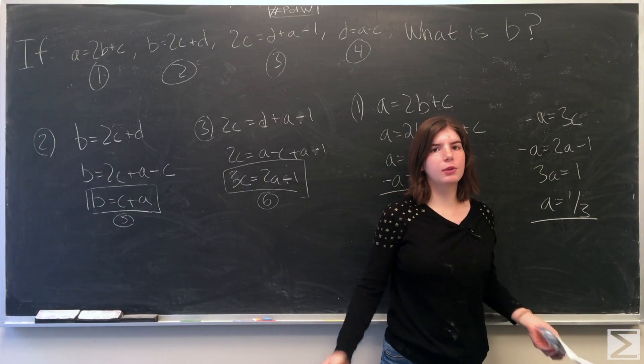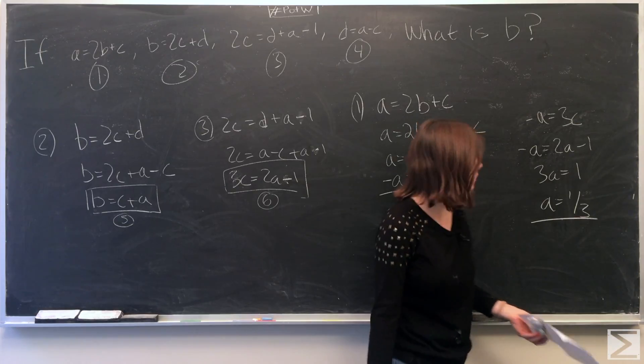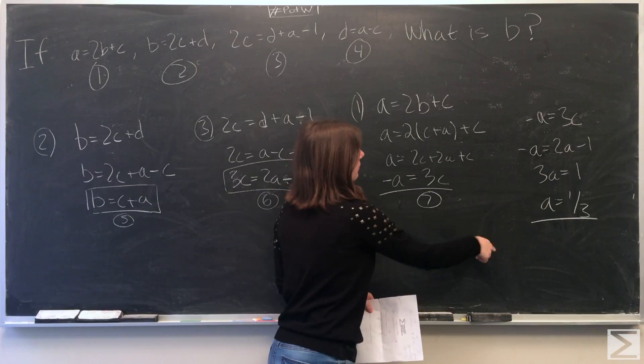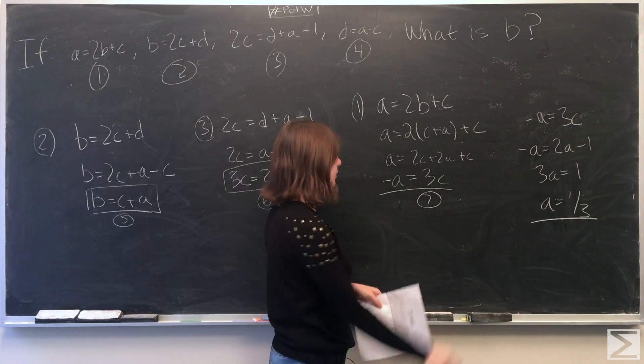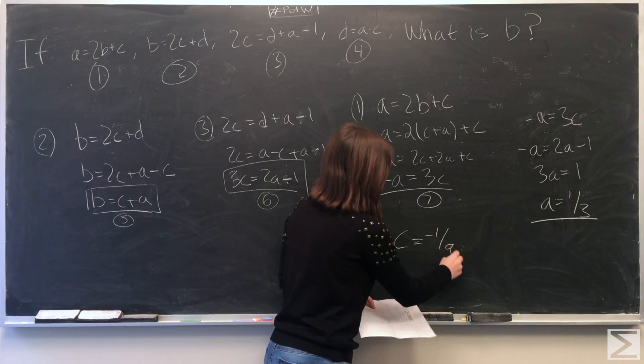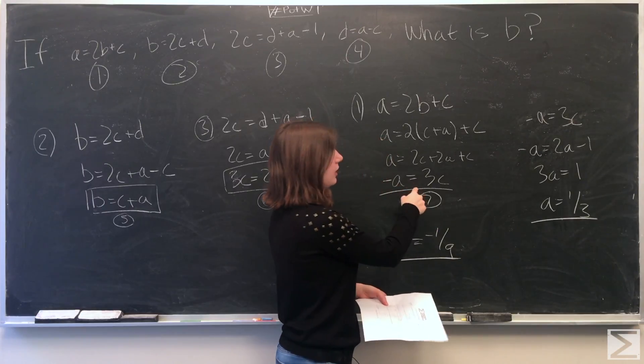And then once you've found one of the values, it makes it pretty easy to find the rest of the values. We can find c from here, work backwards. If a equals one-third, c equals negative one-ninth, because negative a equals 3c.